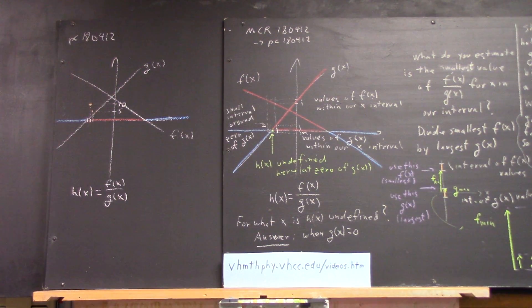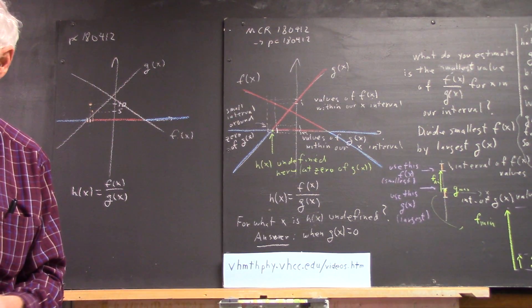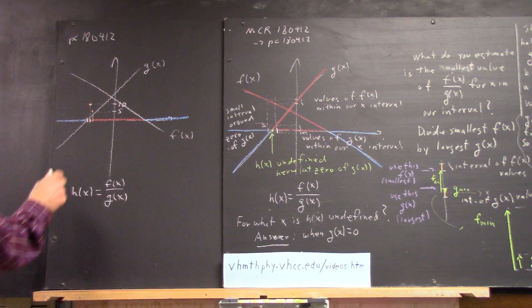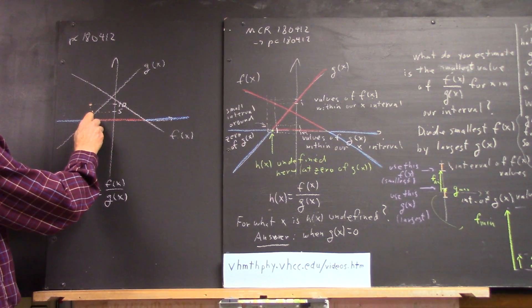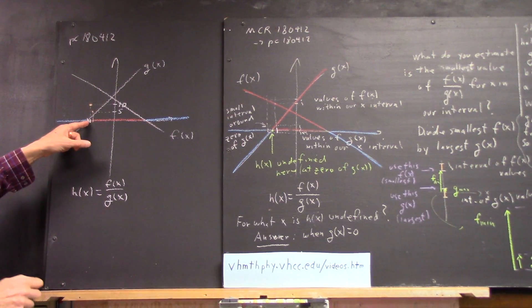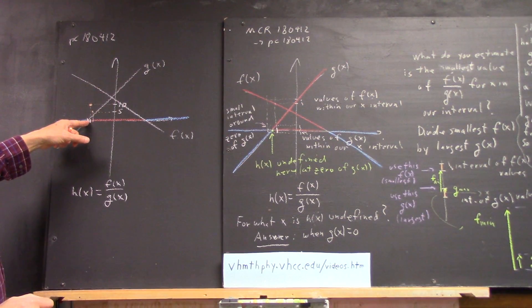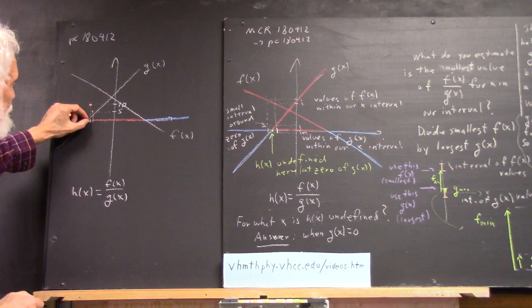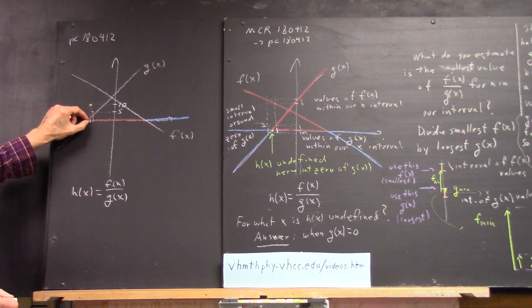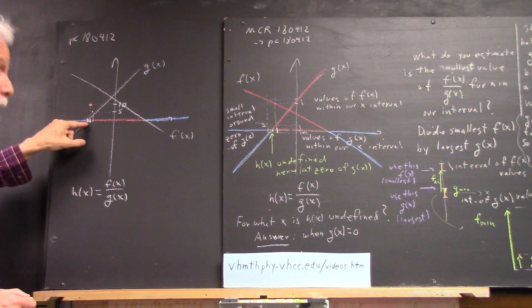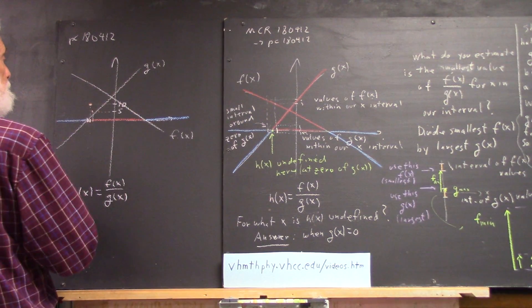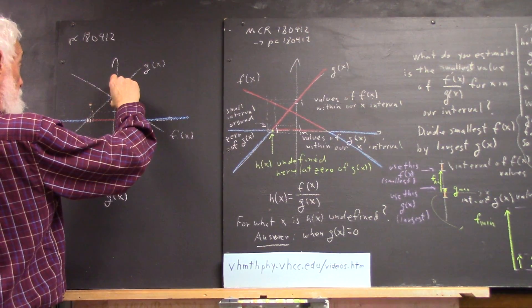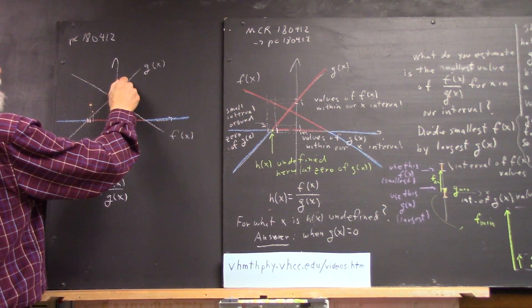Now what happens if we go twice as close as that? What's going to happen to h of x? Yeah, we go twice as close. I can still draw that one. After this, I won't be able to really draw them because the chalk's too wide. So here's another x value. And that's going to give us an even smaller value of g. And it's going to be twice as small if this point's twice as close to this zero. So that's going to give us twenty. So we have now twenty, which is, as you probably know, twice as big as ten. So here we have twenty.